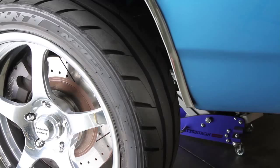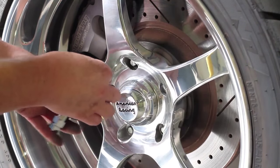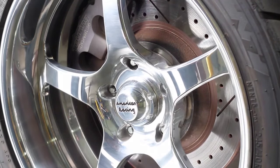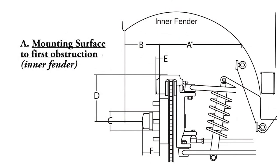To begin, raise the vehicle and securely place it on jack stands. Then you can remove the wheel. We'll start by measuring the distance from the wheel mounting surface in to the first obstruction frame side. This is measurement A on the worksheet.